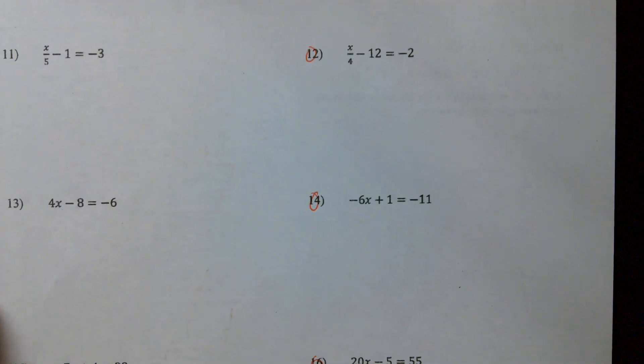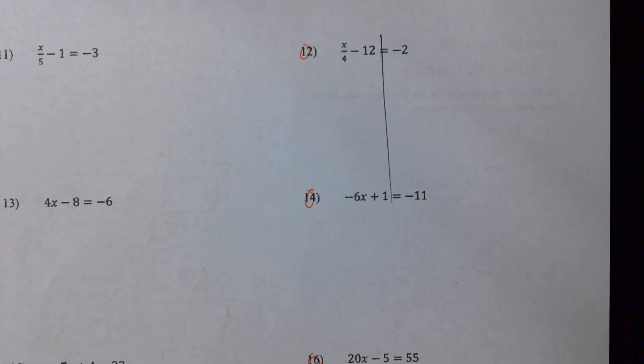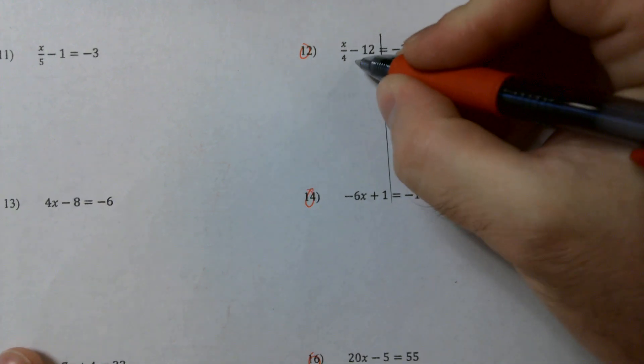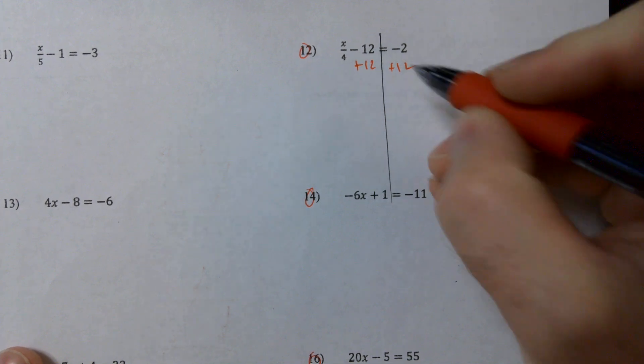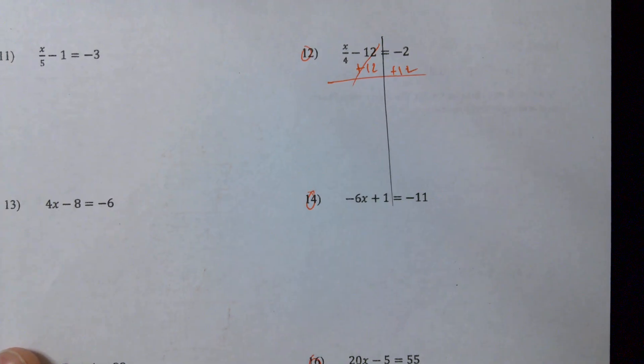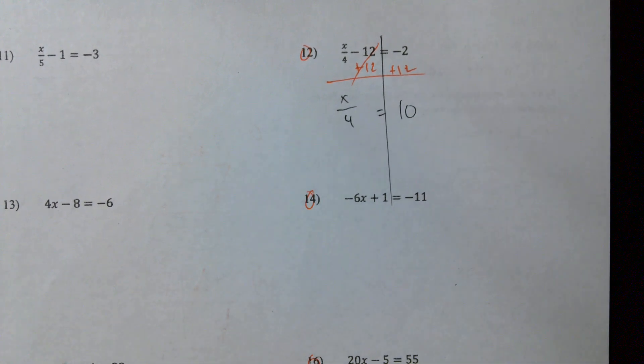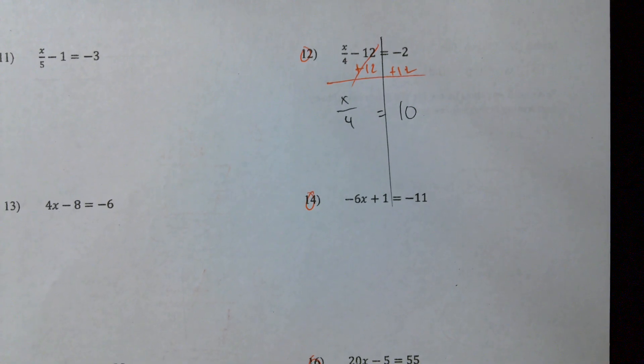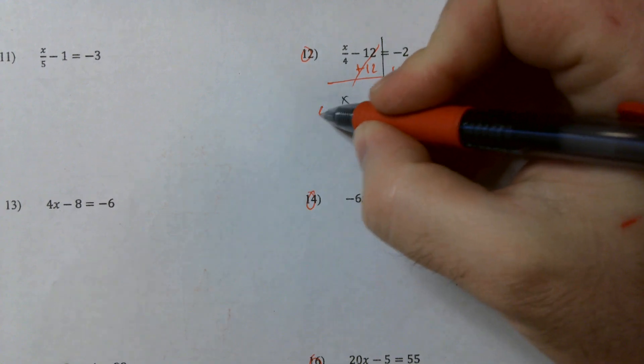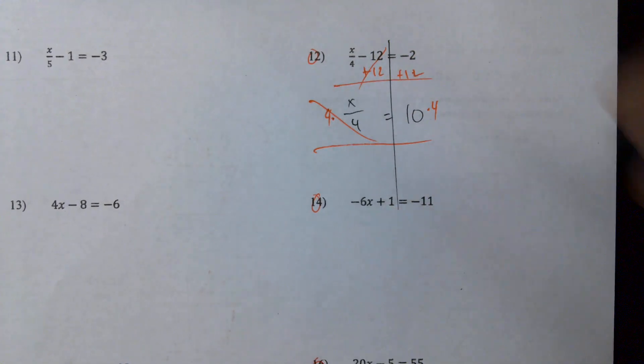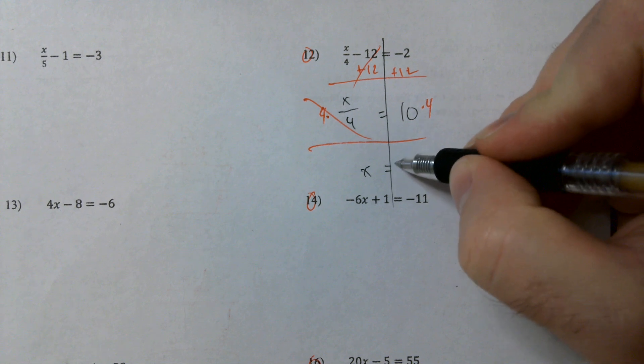All right, on to the back. Number twelve, we got another one of those weird division problems. What's the first thing I want to do here in number twelve? Plus twelve. Now what? Negative two plus twelve? Ten or negative ten? Ten, good, great confidence. Now what? Forty. Multiply by four, good, and we get forty. There we go.